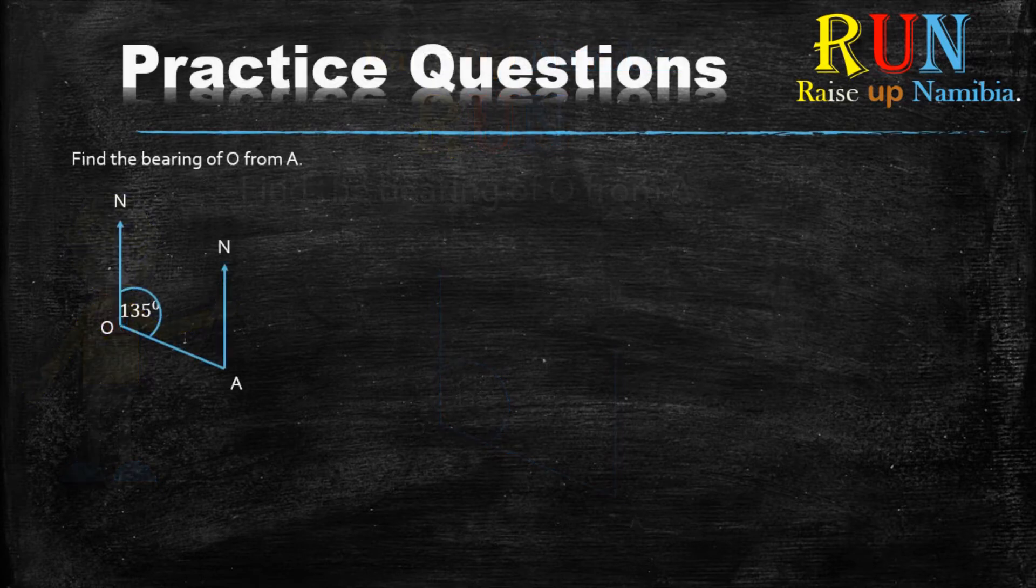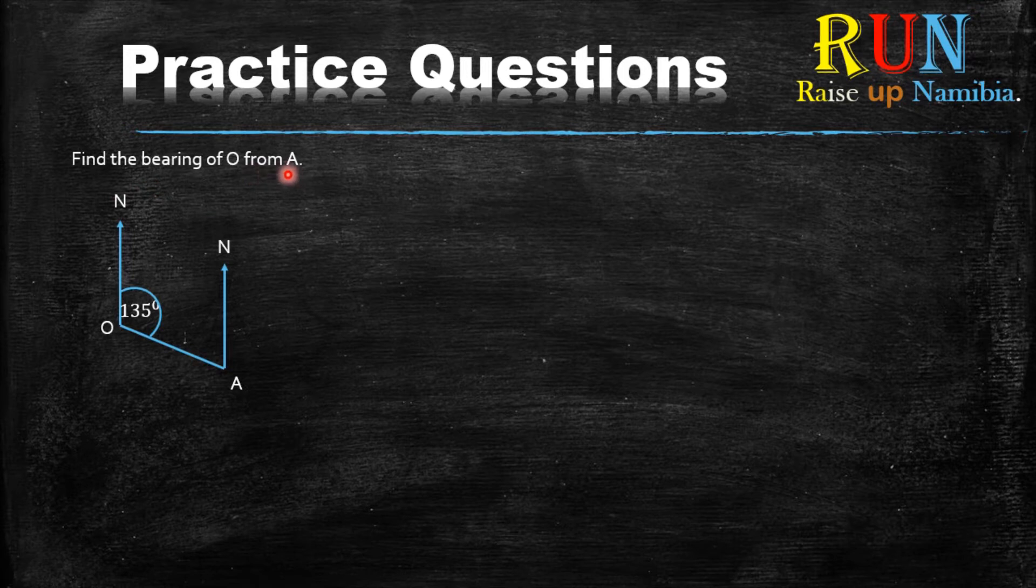The question or the example states find the bearing of O from A. Now what you want to do is you want to focus where it says from. So it says from A. Now if you watched part one of bearings which dropped yesterday, those examples were involved in something like a cross already where we knew that at the north is 0, at the east is 90 degrees, and then the south was 180, the west was 270.